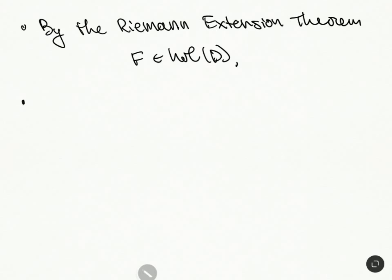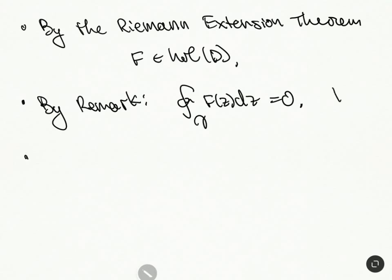And by the remark, we have that the integral over gamma of F of Z DZ is equal to 0. All right, and we can actually write what this means. So now we compute. So we compute this guy.